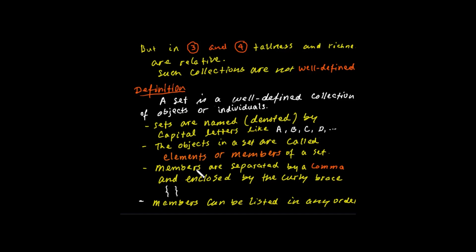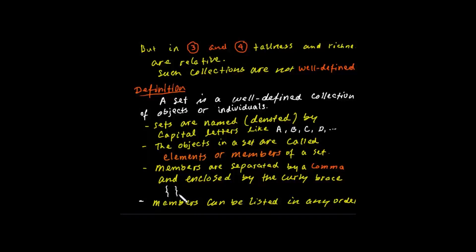Members or elements are separated by a comma and they are enclosed by curly braces. Members can be listed in any order.